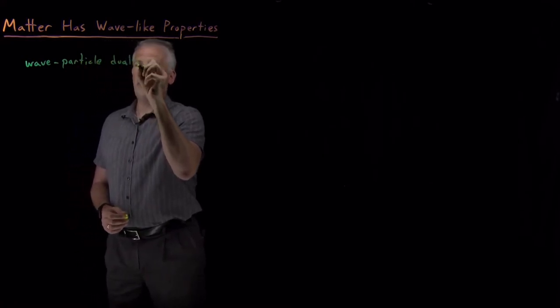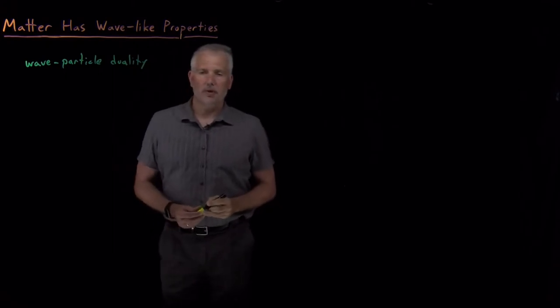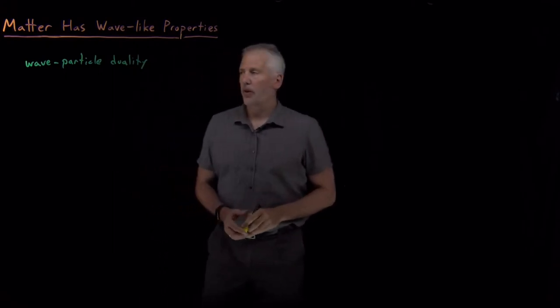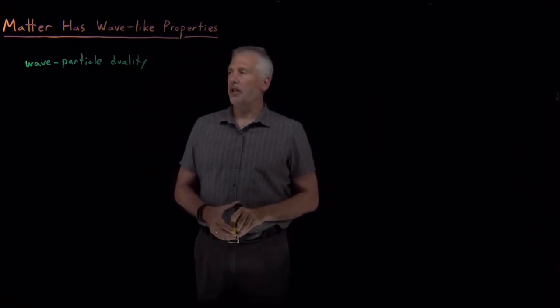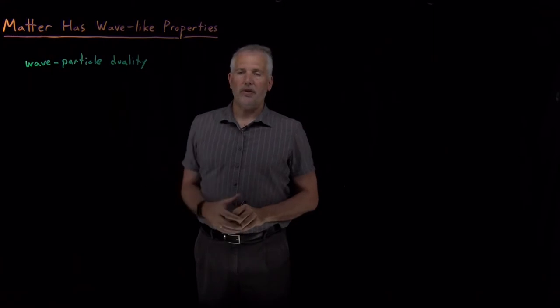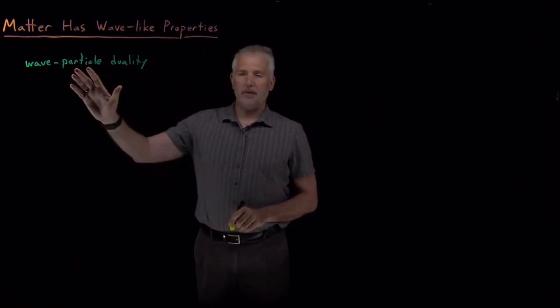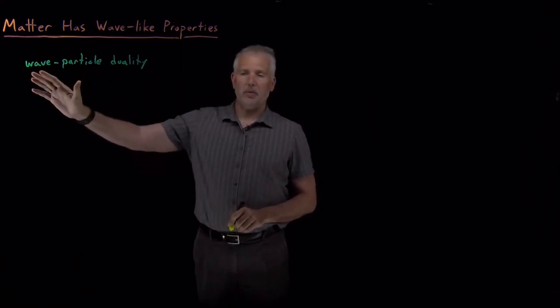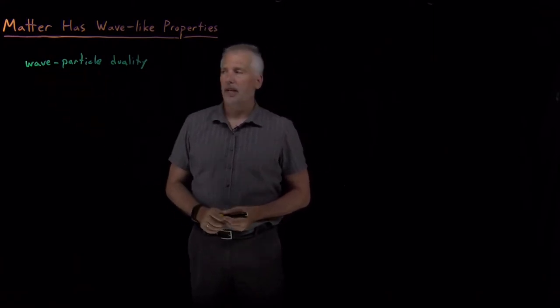Everything — every quantum mechanical object, whether it's a photon of light or whether it's an atom or a molecule or an electron — has what's called wave-particle duality. Sometimes it behaves like a particle; in other ways it behaves like a wave.